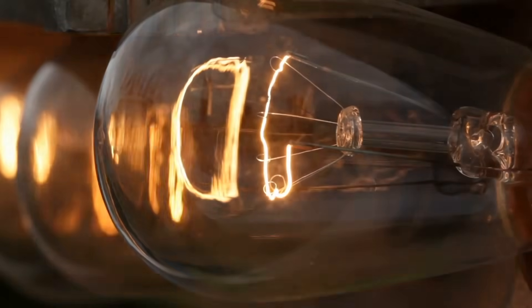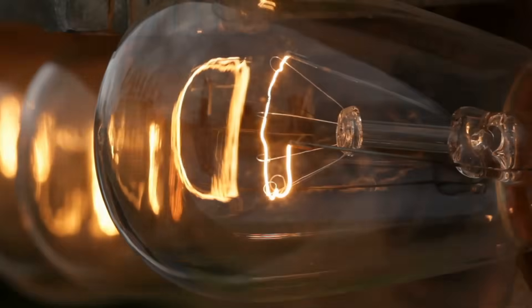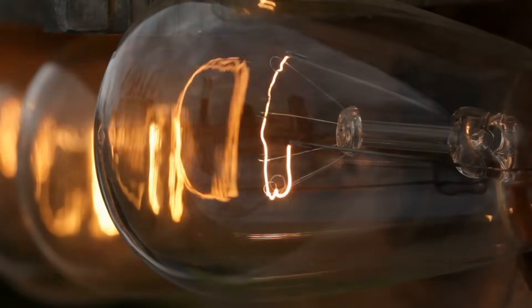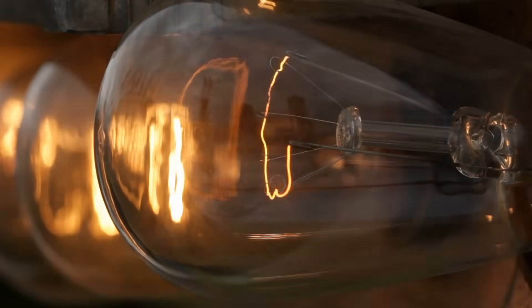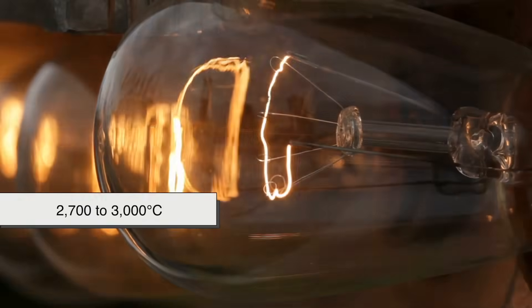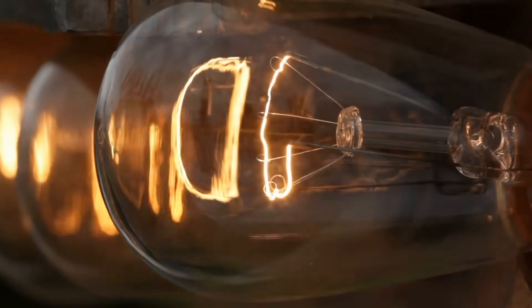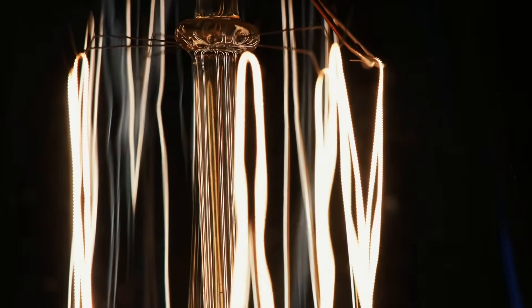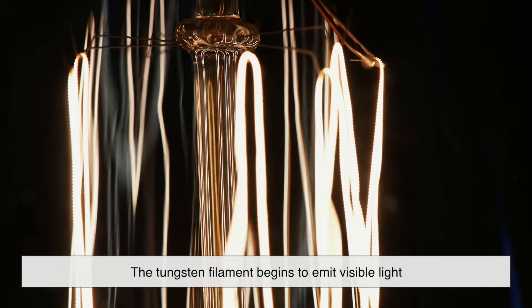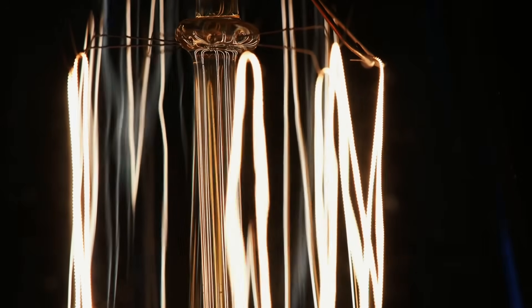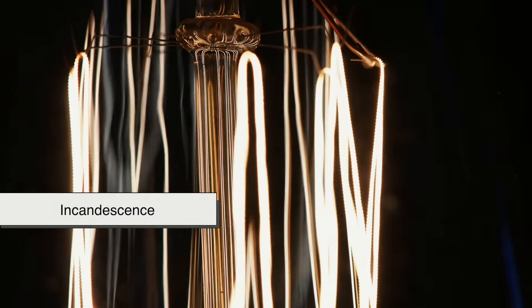encountering resistance. This resistance causes the tungsten to heat up, like seriously heat up. We're talking temperatures as high as 2,700 to 3,000 degrees Celsius, hotter than lava. At that insane temperature, the tungsten filament begins to emit visible light, a phenomenon known as incandescence.